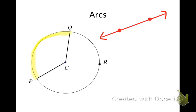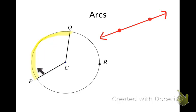A circle is infinite just like a line is, but an arc is finite — it has a definite beginning and an end. It's just a part of a circle. That's all that an arc is.